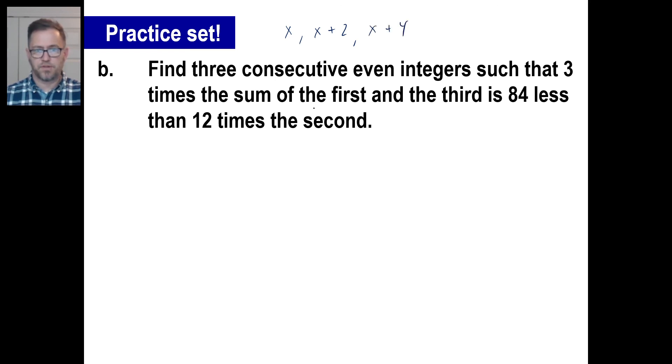Three times the sum of the first and the third. Okay, so three times something. The sum of the first and the third. Well, there's the first. There's the third. That's 2X plus 4. It's 84 less than 12 times a second. Okay, let's hang on to that for a second. 12 times a second would be this.